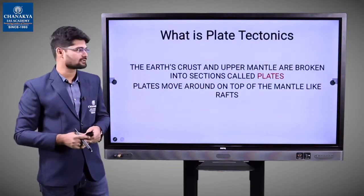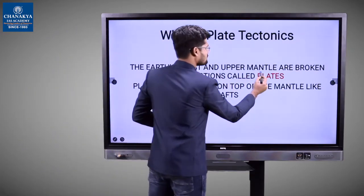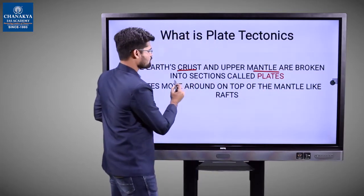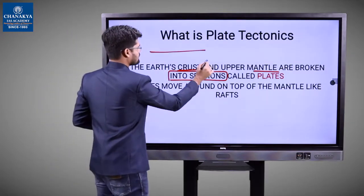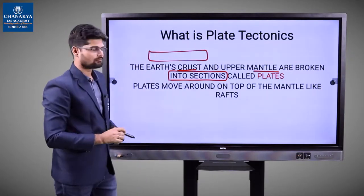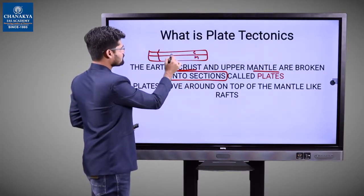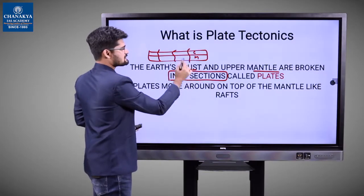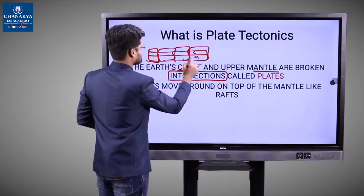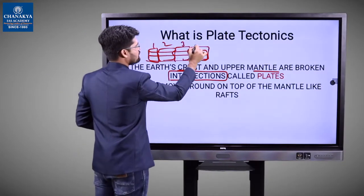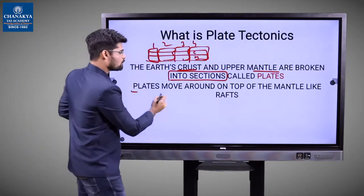What is plate tectonics? Basically, it talks about how the earth's crust and upper mantle are broken into sections. Those sections — the crust and mantle broken into various segments — are called plates. Each one of these sections, 1, 2, 3, 4, are individually called plates.